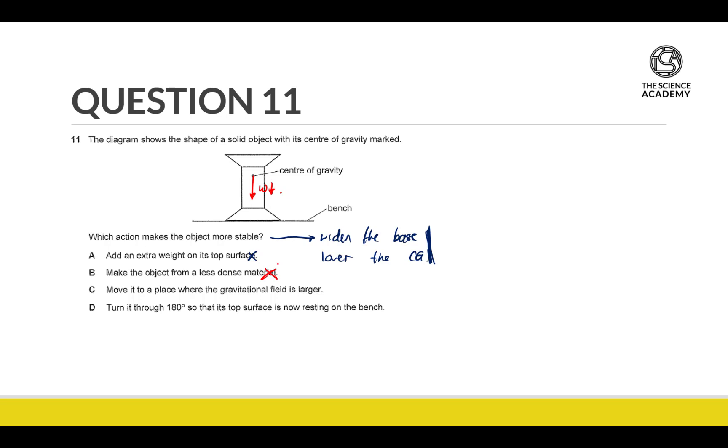Move it to a place where the gravitational field is larger. We already know that the weight equals the mass times the G field strength, so the weight is going to be bigger. But as far as the position of the CG is concerned, or the width of the base is concerned, nothing changes. So C is also out.